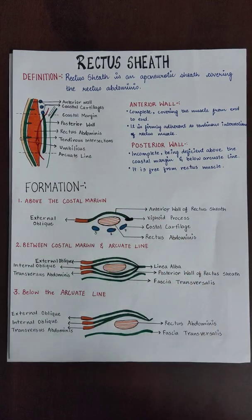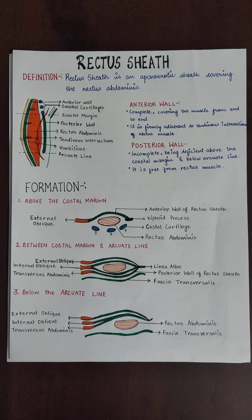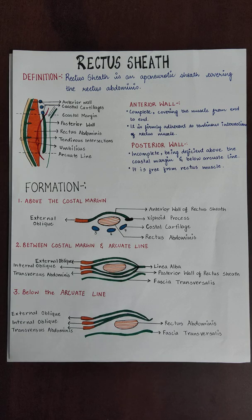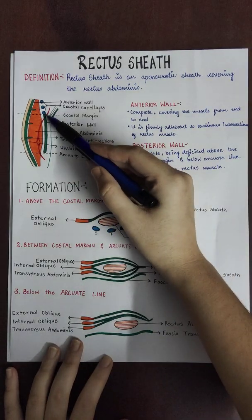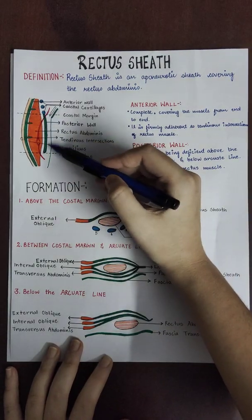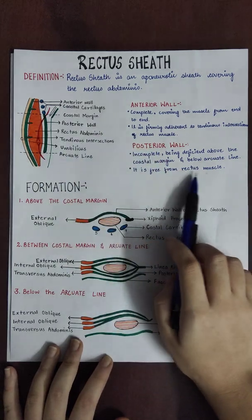If you have closely observed six-pack abs, then what happens? Three packs are present on the right side and three packs are present on the left side. And under them, the crease we see is the tendinous intersections. The posterior wall, however, is not adhered to the rectus abdominis muscles — it is free.